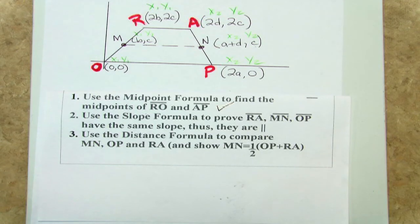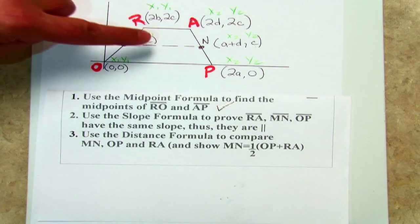Our second step in our mid-segment trapezoid proof is to use the slope formula to prove that the two bases and the mid-segment are parallel.